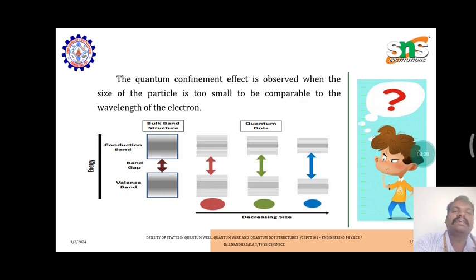As the figure shows, the size decreases from 3 dimension, 2 dimension, 1 dimension, and 0 dimension. As the dimension decreases, the band gap between the valence band and conduction band increases.